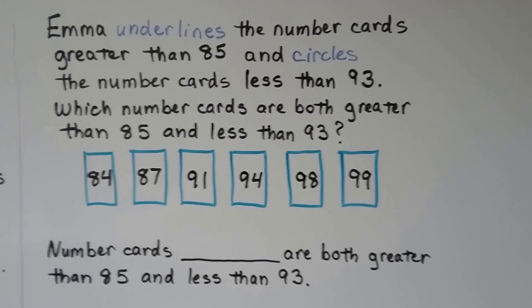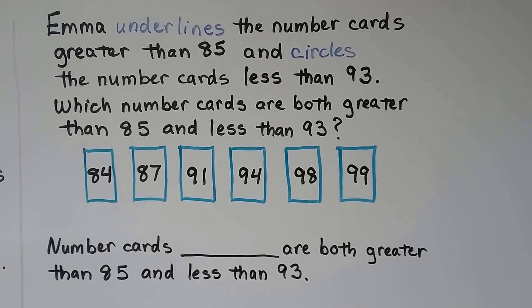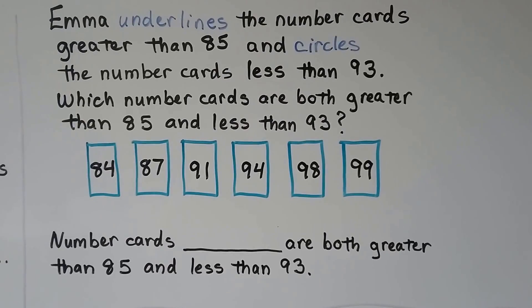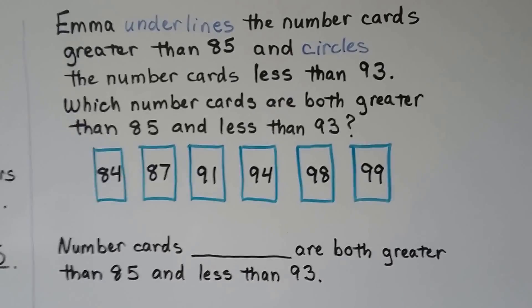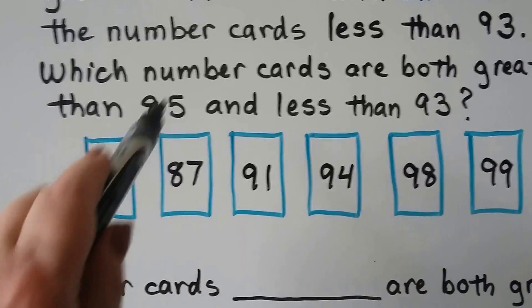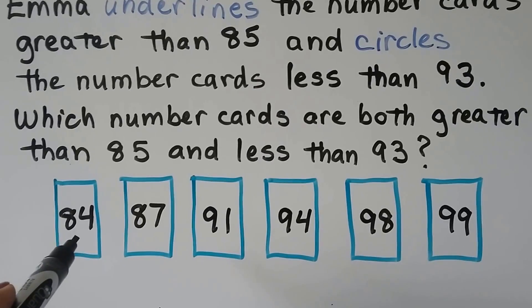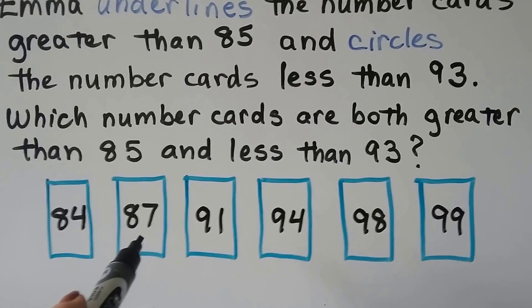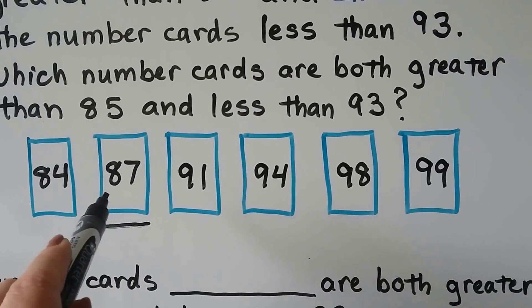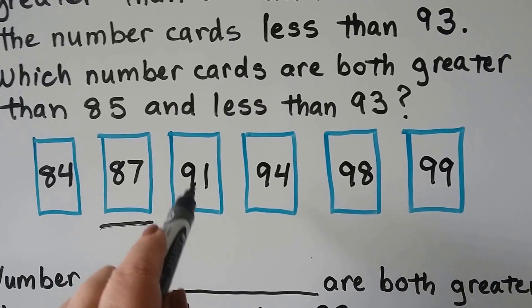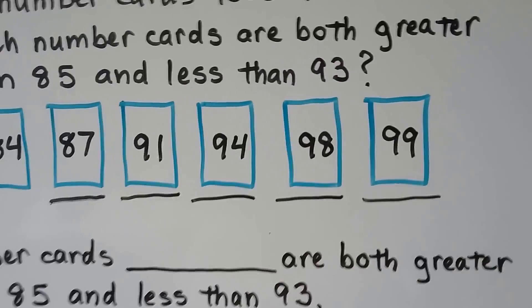Emma underlines the number cards greater than 85 and circles the number cards less than 93. Which number cards are both greater than 85 and less than 93? It has to be both. First, we underline the number cards greater than 85. Is 84 greater than 85? They both have eight tens, but 85 has five ones and 84 has four ones — not going to underline this one. Is 87 greater than 85? It has seven ones and 85 has five ones — yes, we underline 87. Is 91 greater than 85? It has nine tens and 85 has eight tens — yes, anything with nine tens is greater than 85.